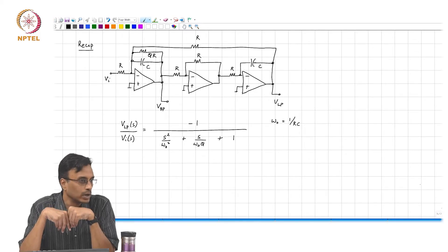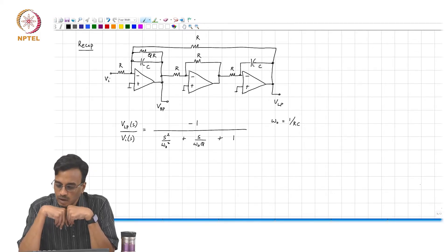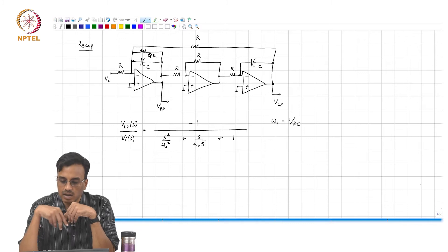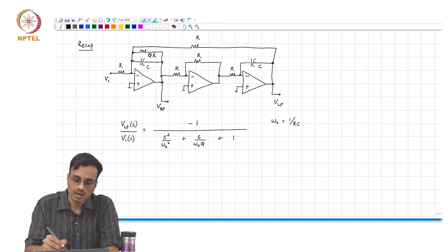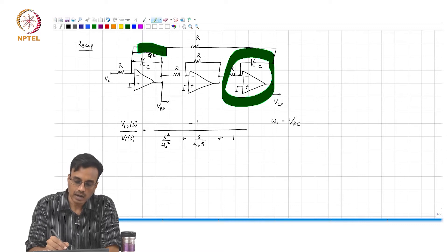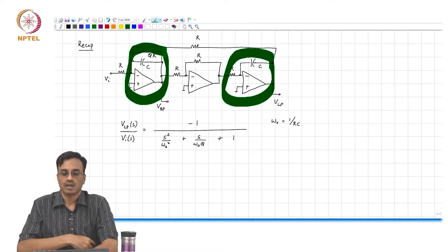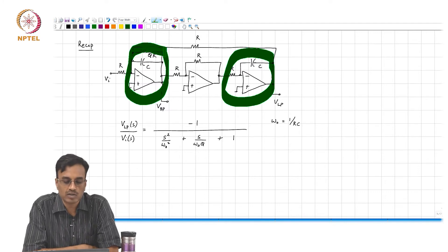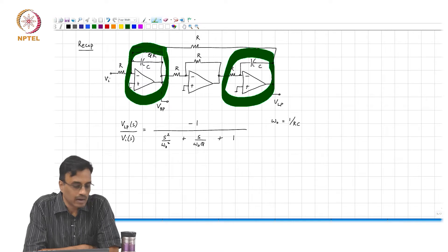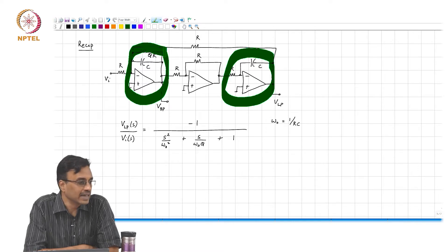A quick recap of what we were doing in the last class. We derived the active RC biquad. It consists of 3 op amps and you basically have, as you can see, an integrator. This is also an integrator, except that it becomes an integrator only when q tends to infinity, and the addition of the resistor makes the integrator a leaky one.